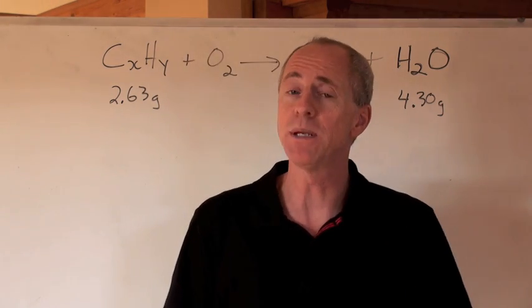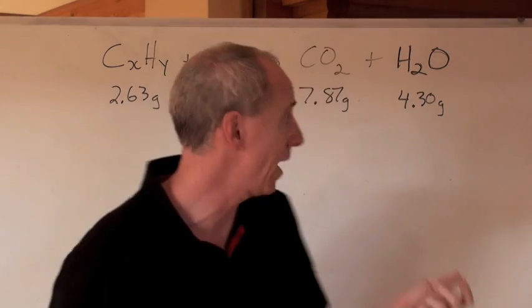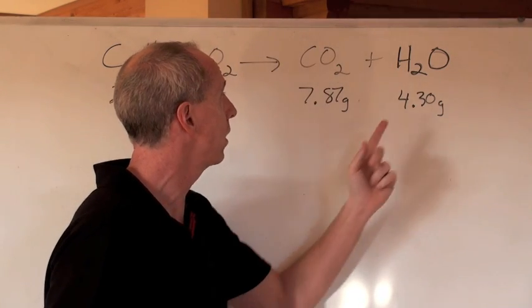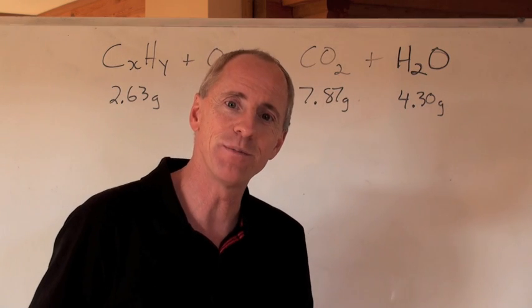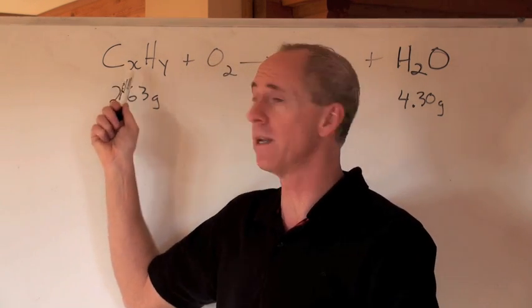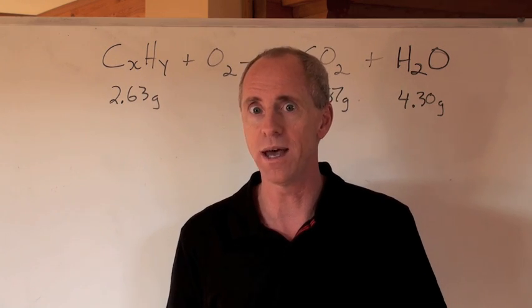You're going to be given masses. Like, I got 2.63 grams of that chemical undergoing combustion, and it forms this mass of carbon dioxide and 4.3 grams of water. From that information, you're supposed to be able to determine the empirical formula of that compound. How do you do that?